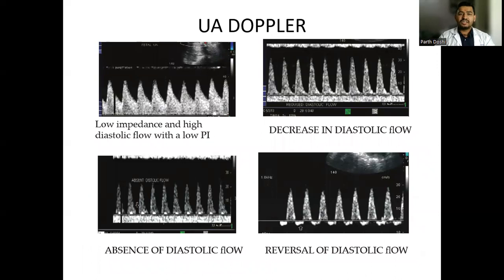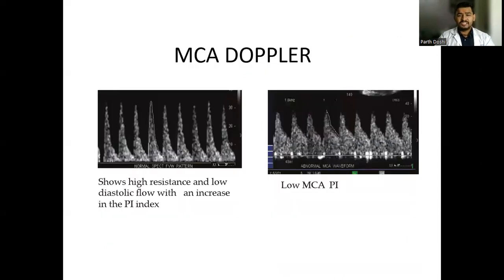This shows the forms of umbilical artery Doppler. The first picture shows low impedance and high diastolic flow with low PI — this is normal for the umbilical artery. The second shows a decrease in diastolic flow with an increase in PI, which is abnormal. The third shows absence of diastolic flow, and the fourth shows reversal of diastolic flow in the umbilical artery. This picture shows MCA Doppler: the first shows high resistance and low diastolic flow with increased PI, which is normal; the second shows high diastolic flow with low MCA PI, which is abnormal.